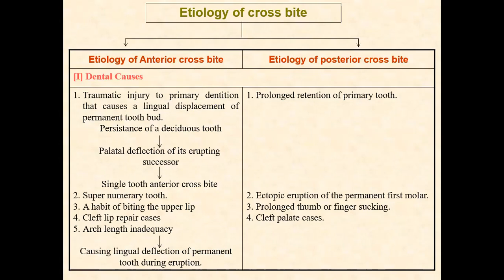One dental cause is a traumatic injury to the primary dentition that causes lingual displacement of the permanent tooth. Imagine a child falling and a tooth undergoing intrusion, where the upper central incisor's position is pushed lingually. It will then erupt on a deflected path, resulting in palatal deflection of its erupting successors — leading to a condition called single tooth cross bite.